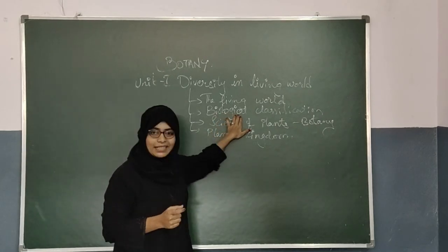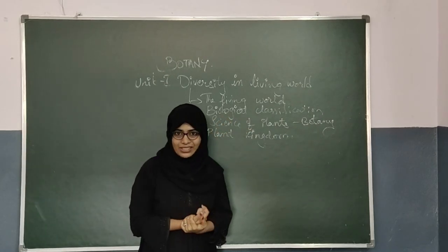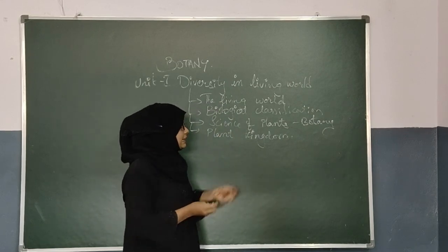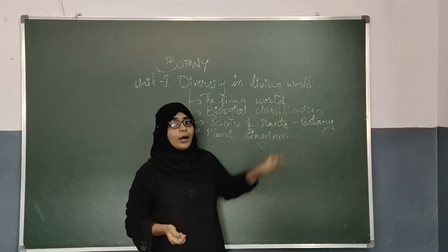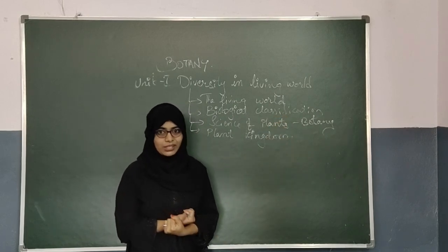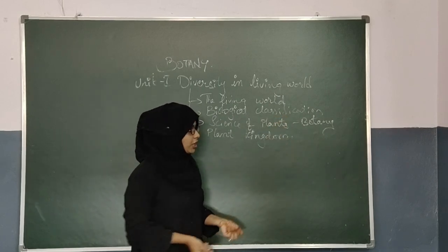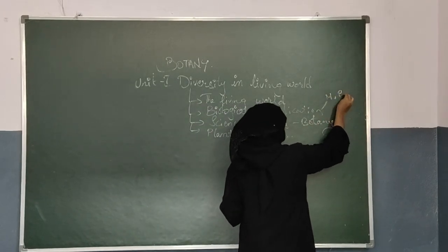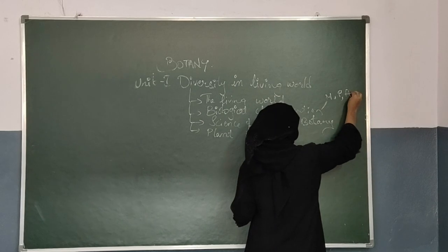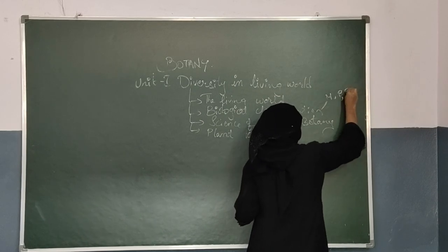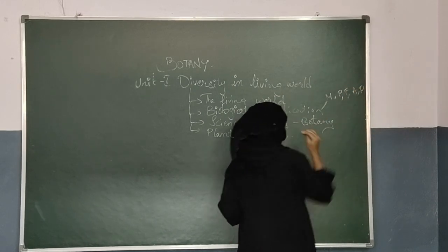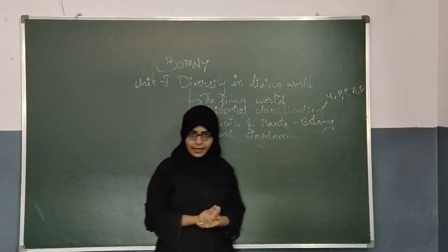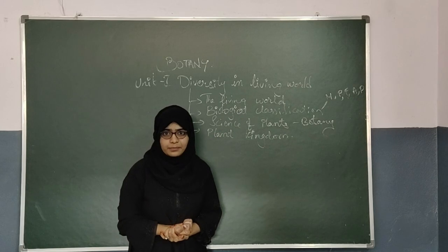Next, coming to biological classification — how the plants are being classified. In this chapter you will be studying about the five kingdom classification system, which consists of Monera, Protista, Fungi, Animalia, and Plantae. In brief, you will be studying about Monera, Protista, and Fungi.